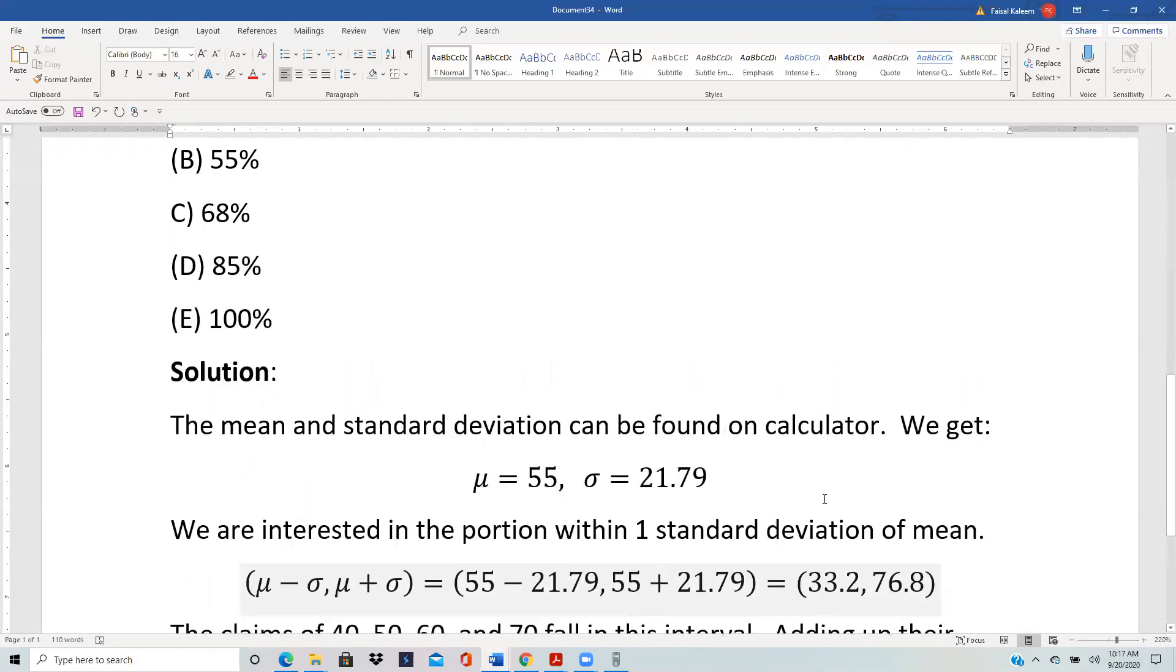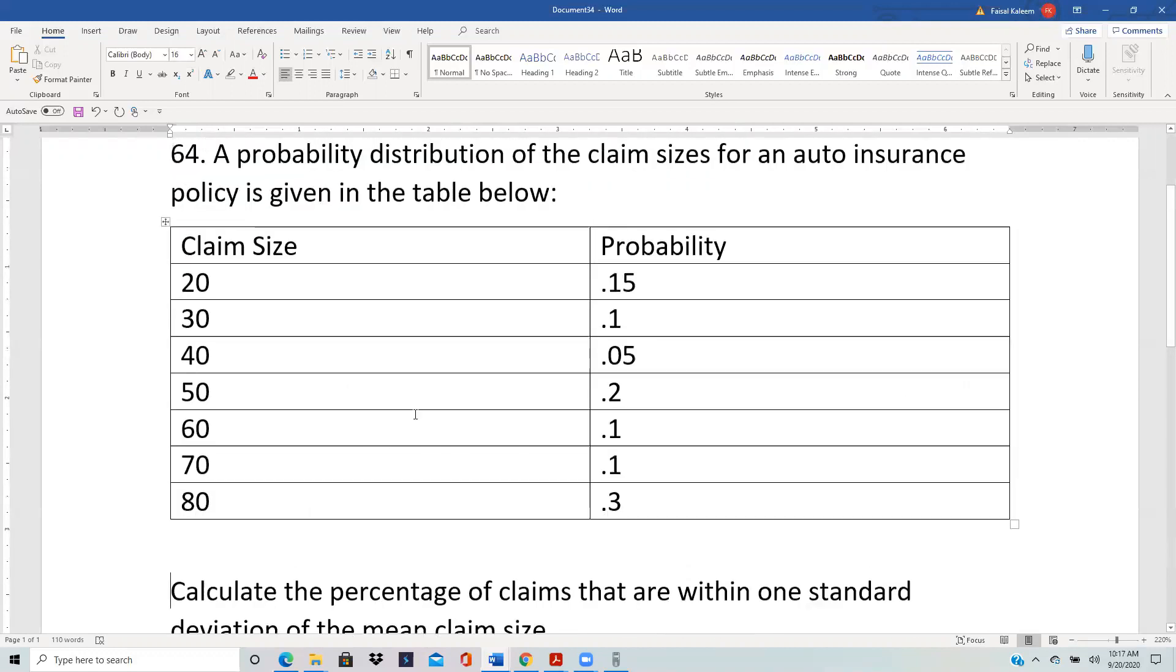So 33.2 to 76.8 we see the 40, 50, 60 and 70 lie in that interval. And so to find the probability we add up the probability of these four.